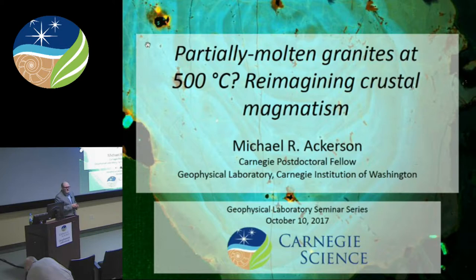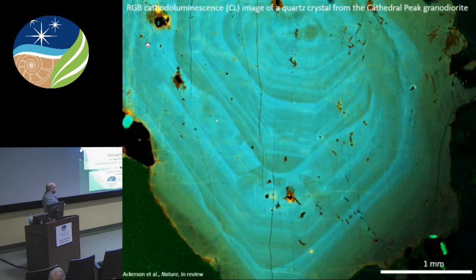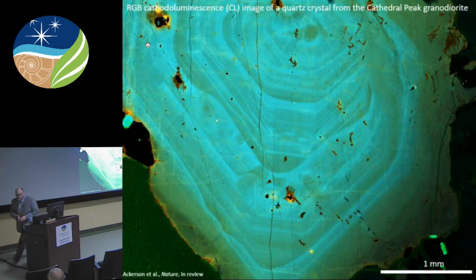I've been pretty successful here doing a lot of experiments with Bjorn and George, but I'm not going to talk about that today. This is a geophysical laboratory, so I figured you guys did enough experimental talk. I'm going to talk about granites — and pretty much Jesse's the only other person here who would bore you with those. This is an RGB cathodoluminescence image of a quartz crystal from the Cathedral Peak Granite Diorite.